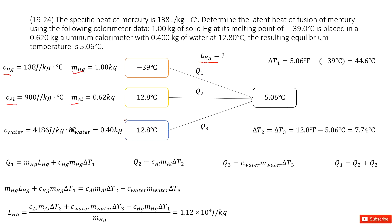So we can see now the temperature change from the mercury is ΔT₁, using final temperature minus initial temperature. And also the temperature changes for Q₂ and Q₃ are the same, so ΔT₂ equals ΔT₃.